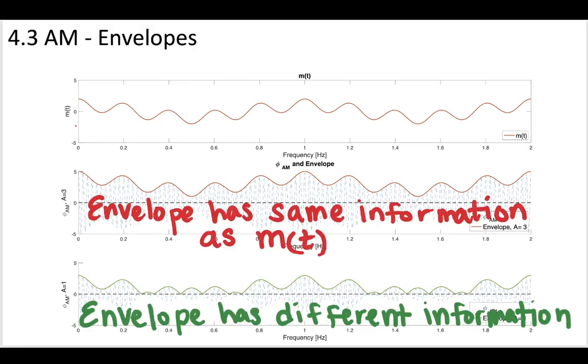So what can we infer from this? Well, we can say that when we added a big enough A, the envelope has the exact same information as the message.